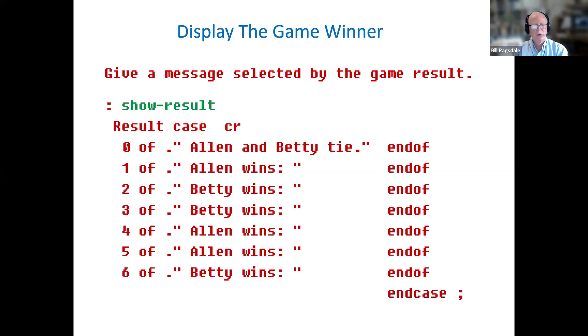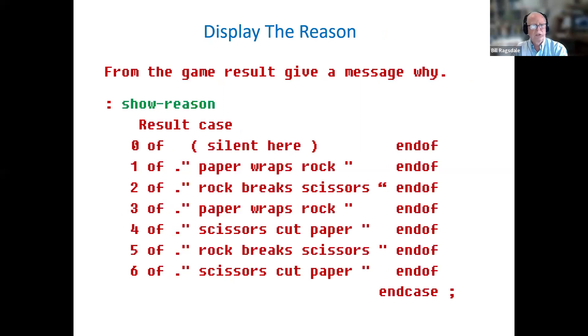Our reporting routines, the first one is to show the result. And again, it will look at those six different cases of zero through six. And if it's a zero, the report, of course, is Alan and Betty tie. And for the other values, we can see the cases for which Alan wins and Betty wins. To expand on that message, we show the reason for the particular win. Again, in the cases of zero through seven, the case zero is silent because it was a tie. For a result of one, it will be saying the win was because paper wraps rock, and so on. So in two or three words, we now have a diagnostic system for testing and a report system for playing the game.